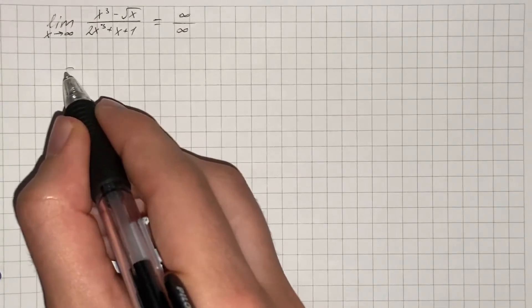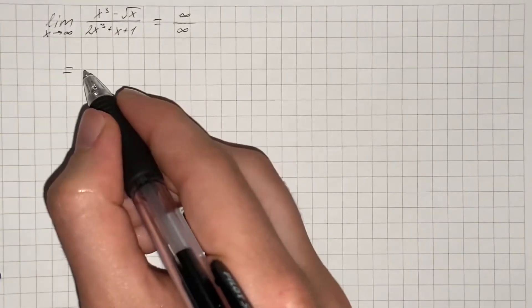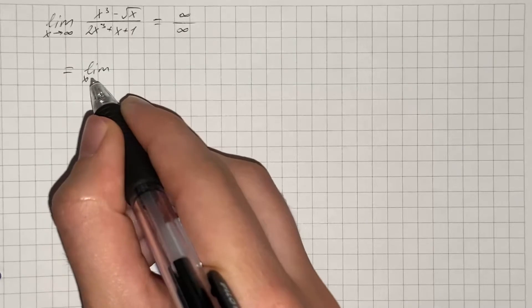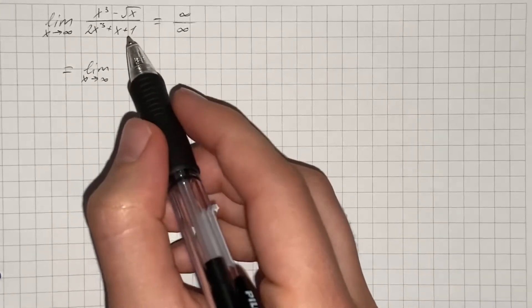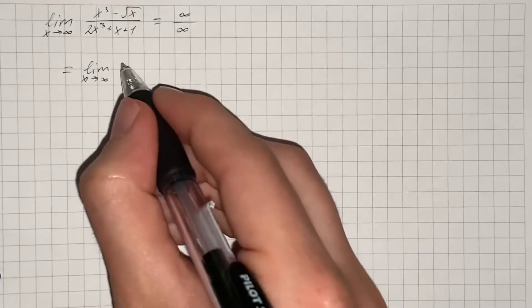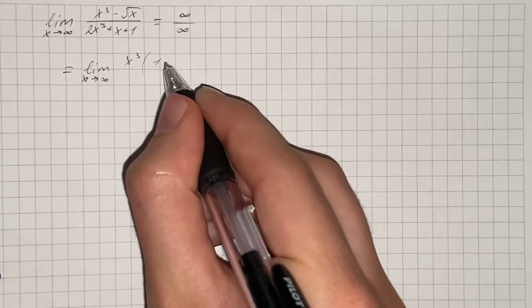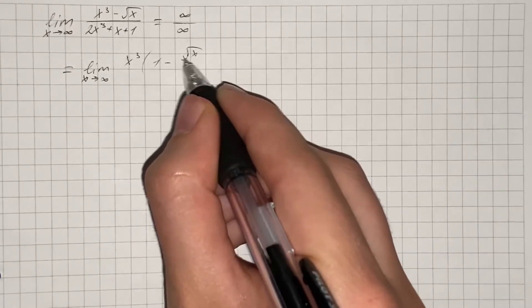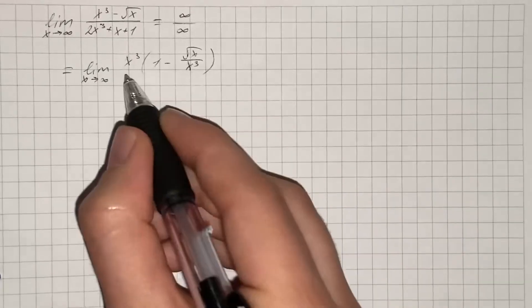So here we're going to simplify our function. That's going to be the limit as x approaches infinity, and we're going to factor out x cubed, so it's going to be x cubed times 1 minus square root of x divided by x cubed.